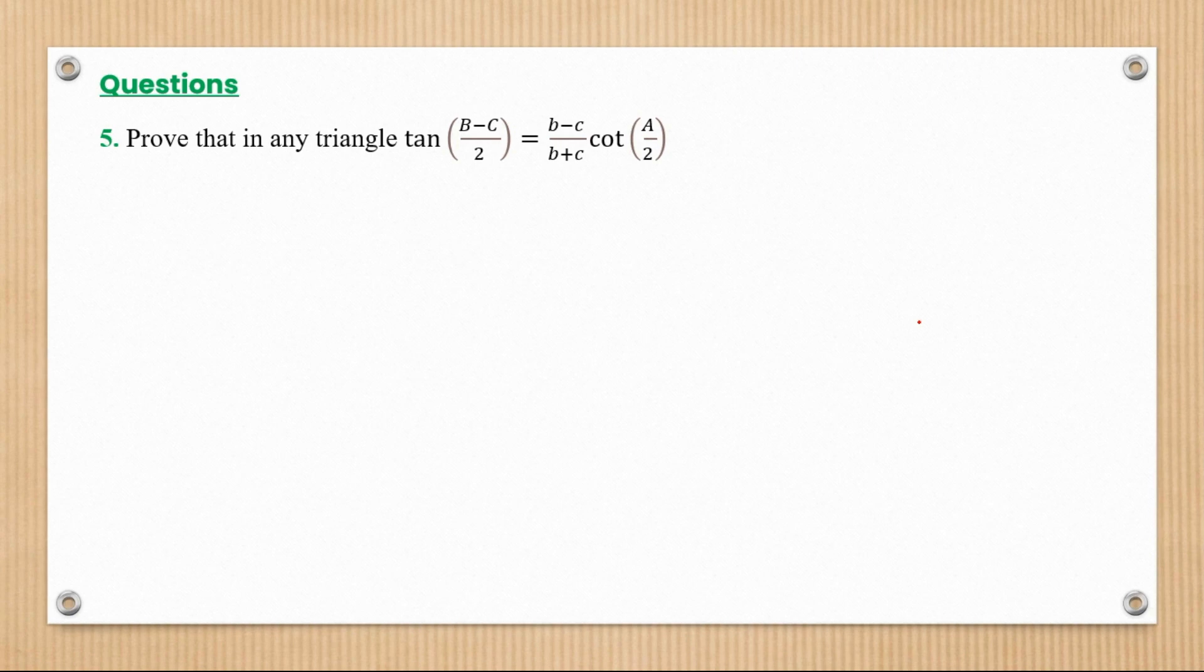Prove that in any triangle, tan of (B - C)/2 equals (b - c)/(b + c) times cot(A/2).